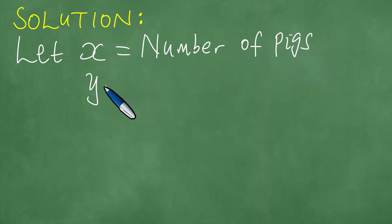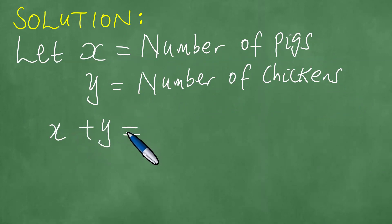Y equals the number of chickens. So that in the end, we have X plus Y equals 40, because there are 40 pigs and chickens in the farmyard.